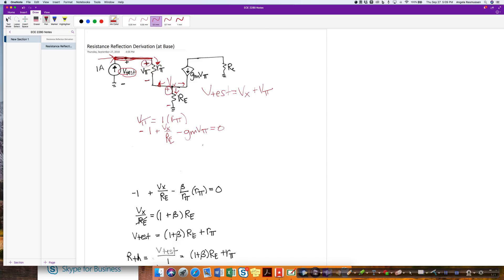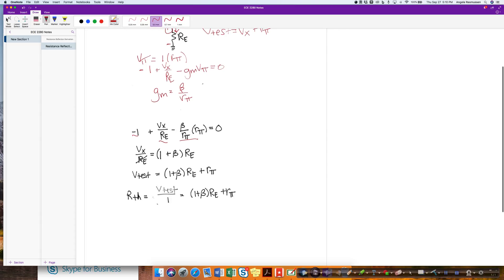I also note that Gm can be described as beta over Rpi. And so I have the node voltage equation, the minus one, Vx over Re. And then I substitute in beta over Rpi. I can then combine that, do the algebra, and that gives me that V-test ends up being (1 + beta)Re + Rpi.